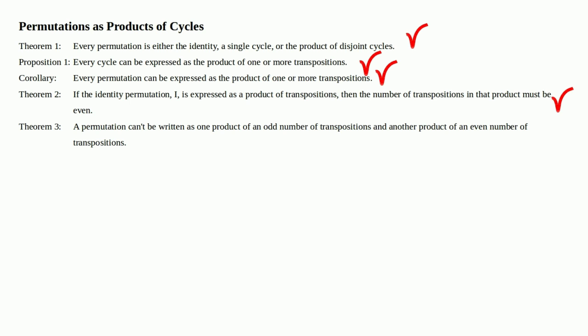And in this video, we'll prove theorem three, which states that a permutation can't be written as one product of an odd number of transpositions and another product of an even number of transpositions. Let's go ahead and get to that proof.